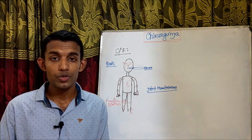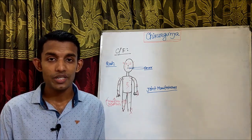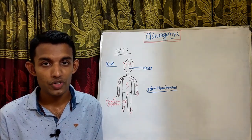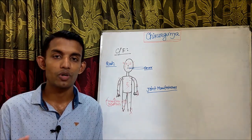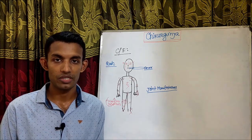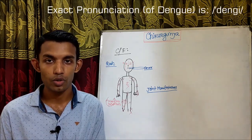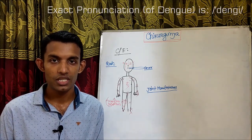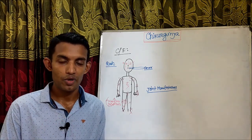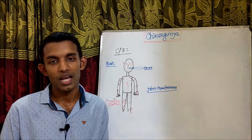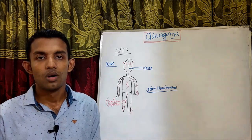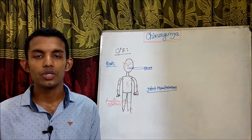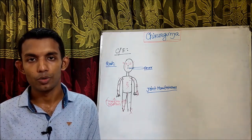Due to clinical similarities, some differential diagnoses should be considered, such as dengue, reactive arthritis, rheumatic fever, and malaria. Now, what are the differences between Chikungunya and Dengue?